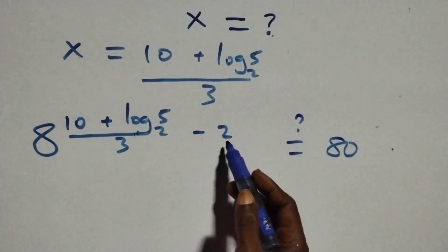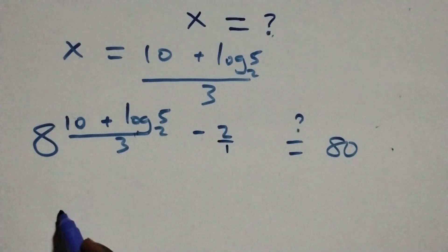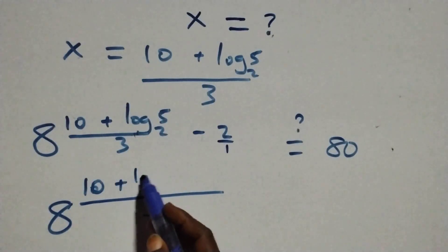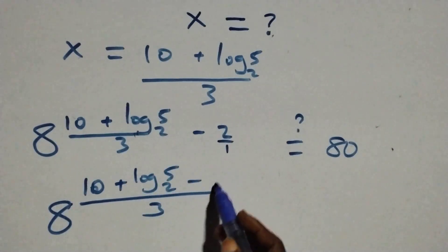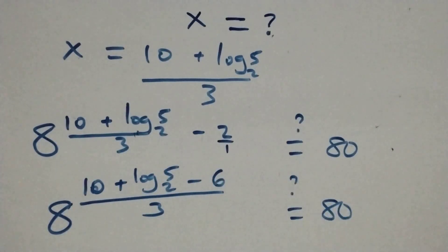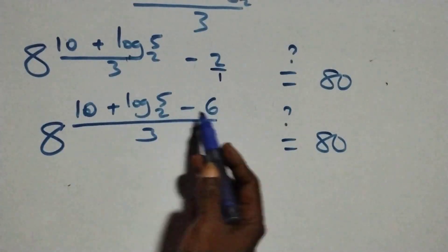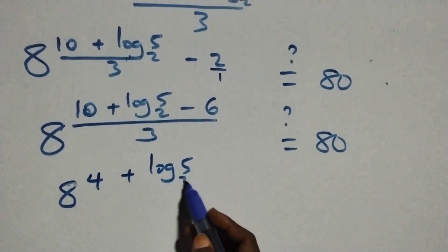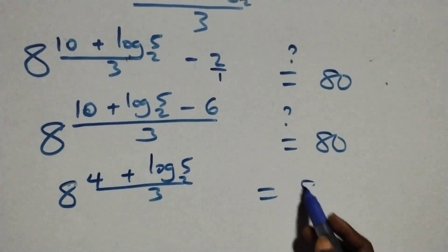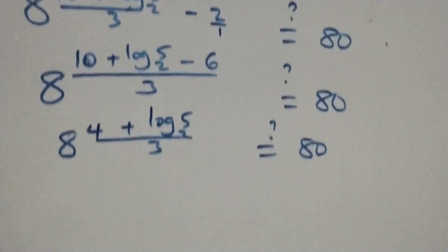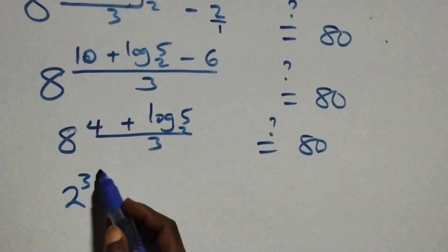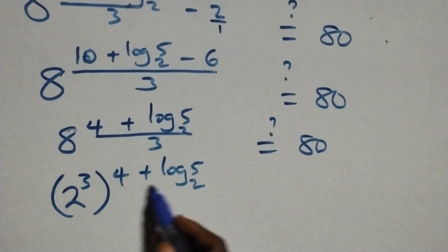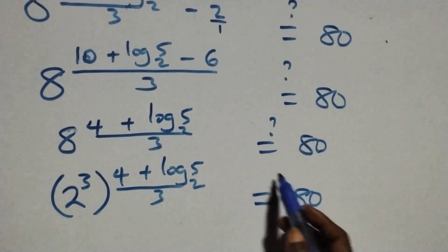From here, 2 is over 1. We can write it as 8 raised to power: we still have 10 plus log base 2 of 5, then minus 6 here, equals 80 on this side. Then 10 minus 6 is 4, giving 8 raised to power 4 plus log base 2 of 5, all over 3. This equals 80 on this side. We can express 8 as 2 raised to power 3, raised to power (4 plus log base 2 of 5) all over 3.